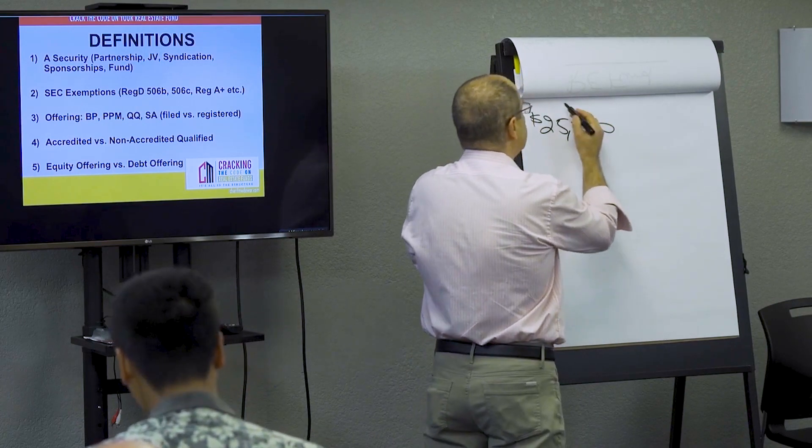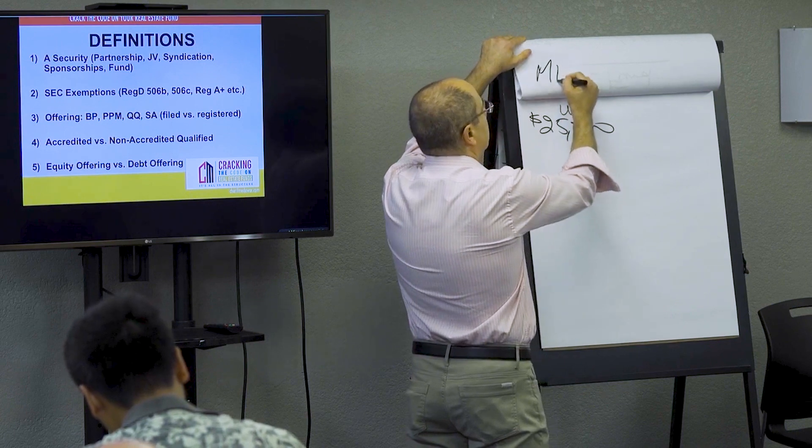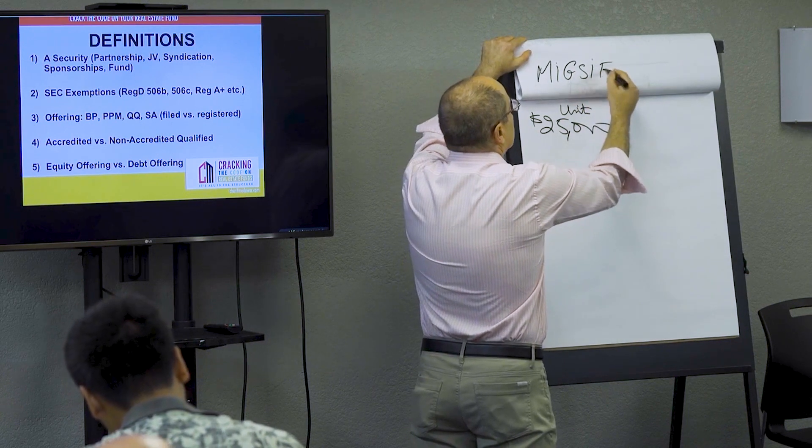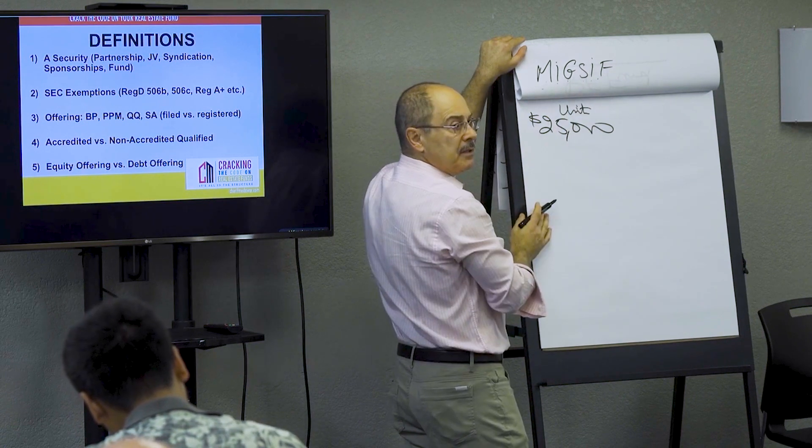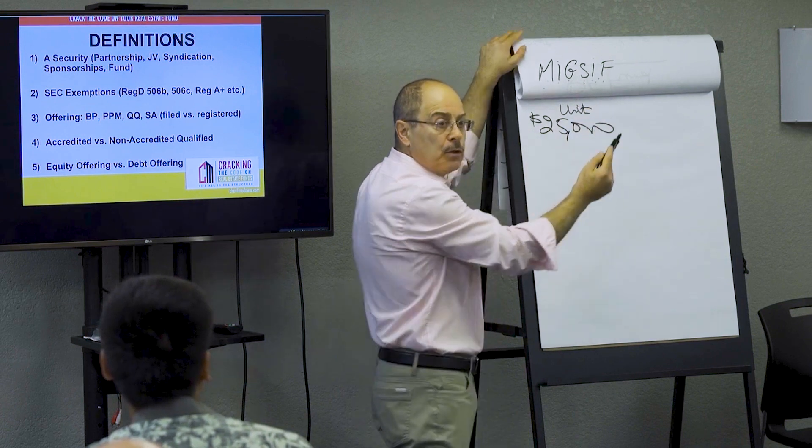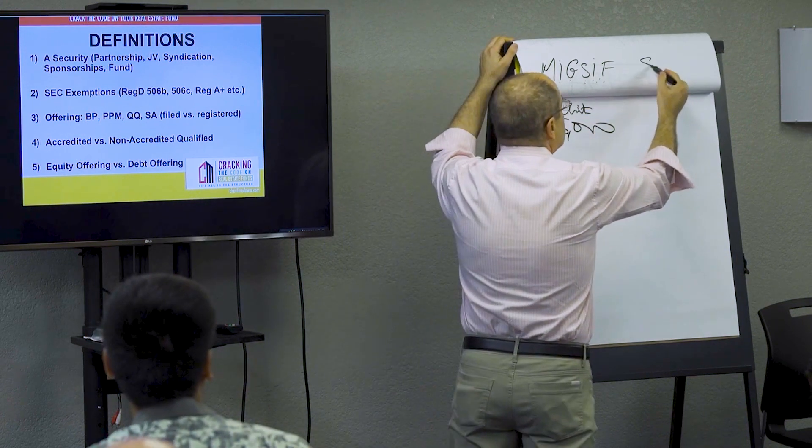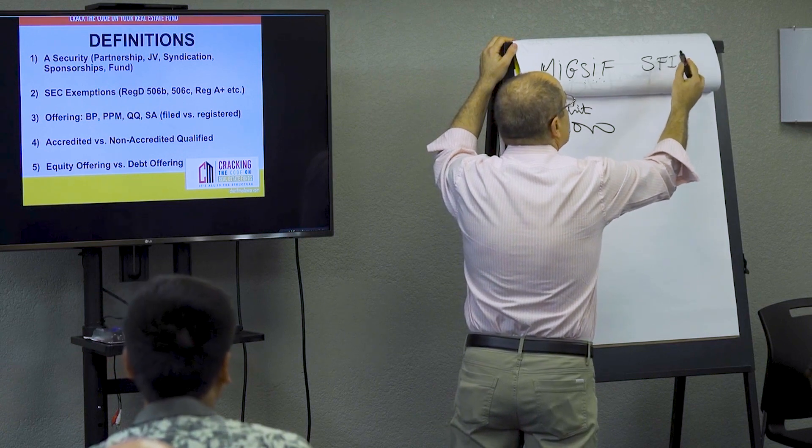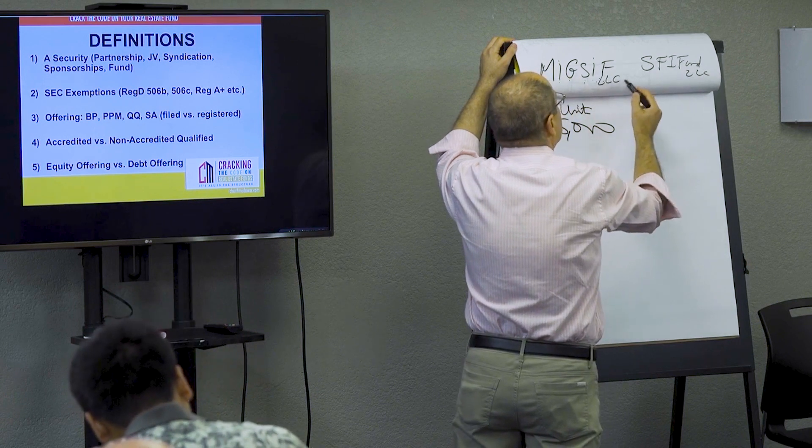Here's my structure. $25,000 is a unit in the LLC. So I have MIGSIF, MEDAWAR, my last name, MEDAWAR International Group Secured Income Fund. See the word? Secured Income Fund. The words, the name says it all. And I have another one, Secured Fixed SFI Fund, Secured Income Fund, LLC. Two LLCs. I'll explain to you why two.